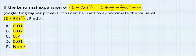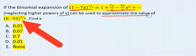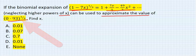If the binomial expansion of (1-7x)^(1/3) = 1 + 7x/3 - 49x²/18 + ... (neglecting higher powers of x) can be used to approximate the value of (0.93)^(1/3), find x.